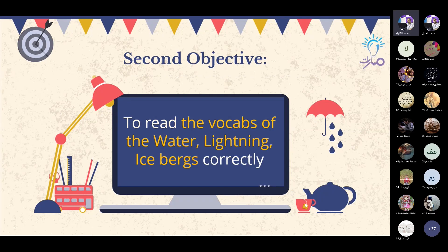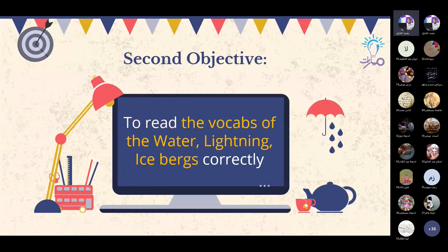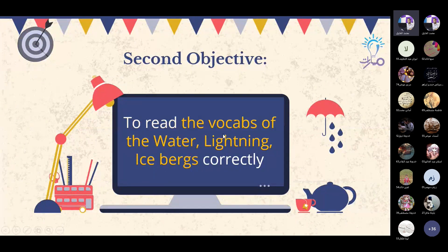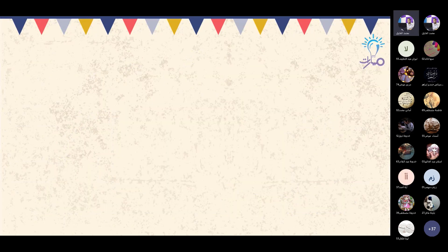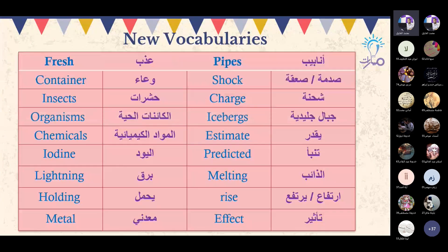Okay, now I'll move to the second objective. I'm going to read it slowly. New vocabularies — مفردات الجديدة.